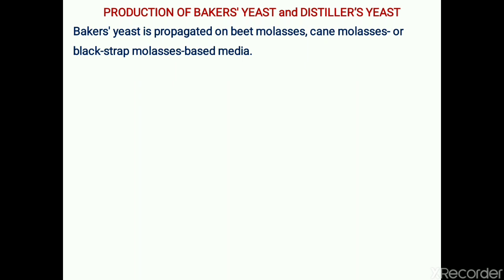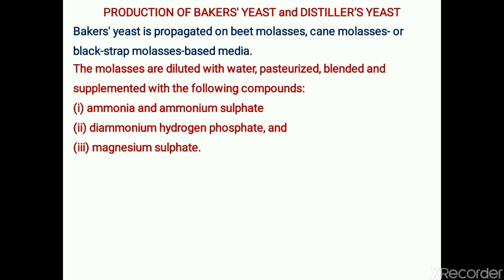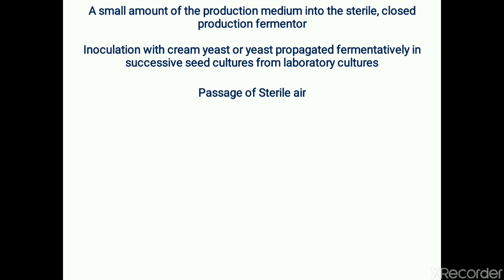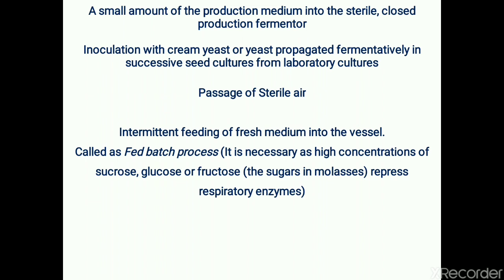Baker's yeast is propagated on beet molasses, cane molasses, or blackstrap molasses-based medium. The molasses is diluted with water, pasteurized, blended, and supplemented with essential compounds such as ammonia, ammonium sulfate as nitrogen source, diammonium hydrogen phosphate, and magnesium sulfate. A small amount of production medium is added into a sterile closed production fermenter, then inoculated with cream yeast or stock yeast propagated from laboratory culture. Sterile air is supplied, and there is intermittent feeding of fresh medium — a fed-batch process.